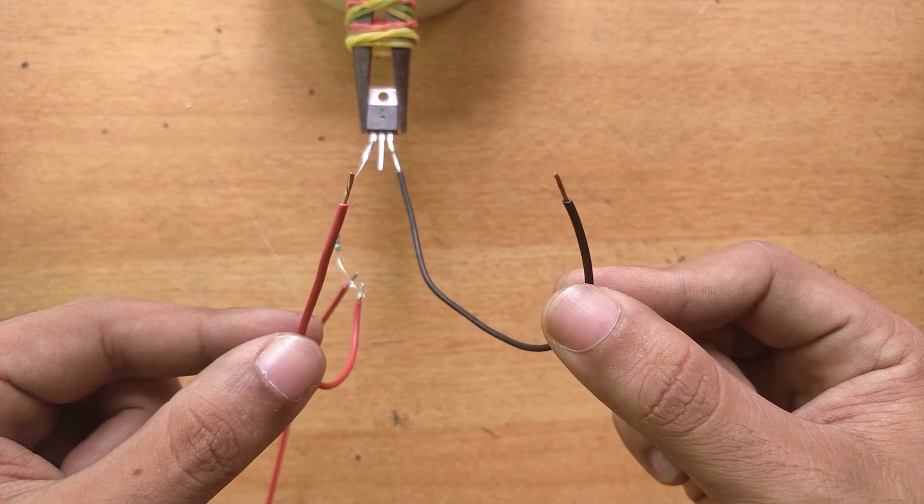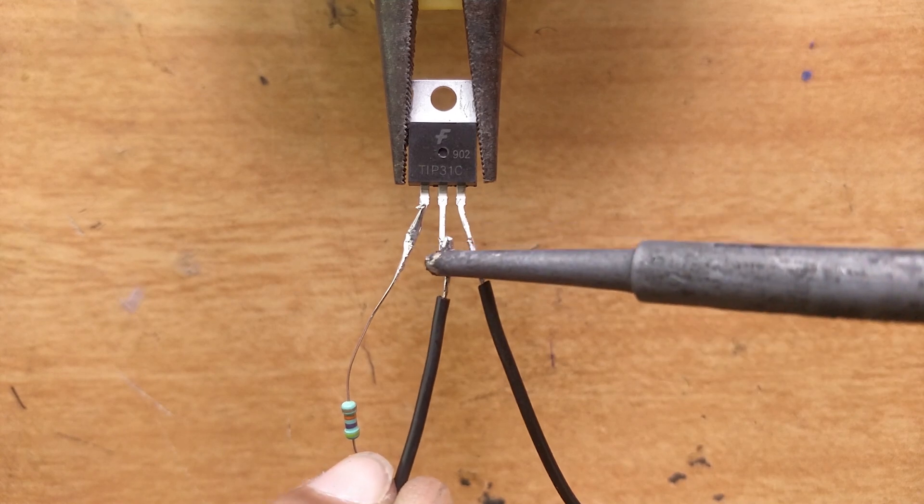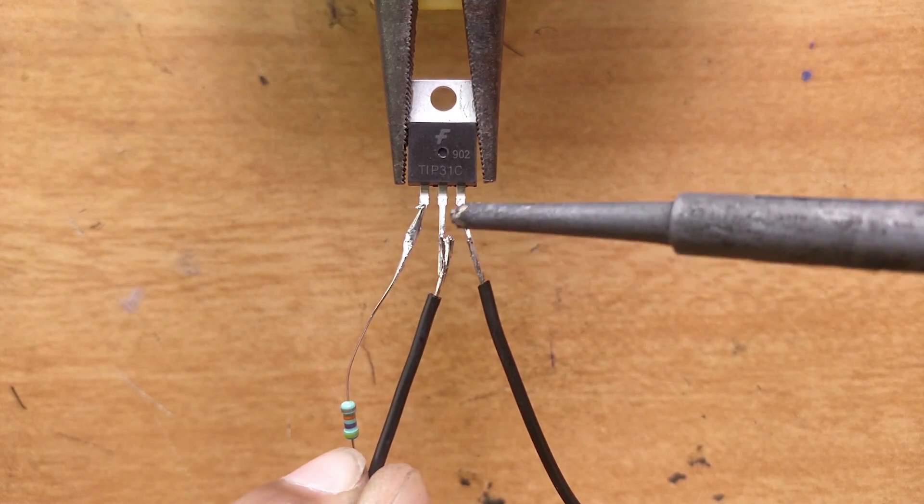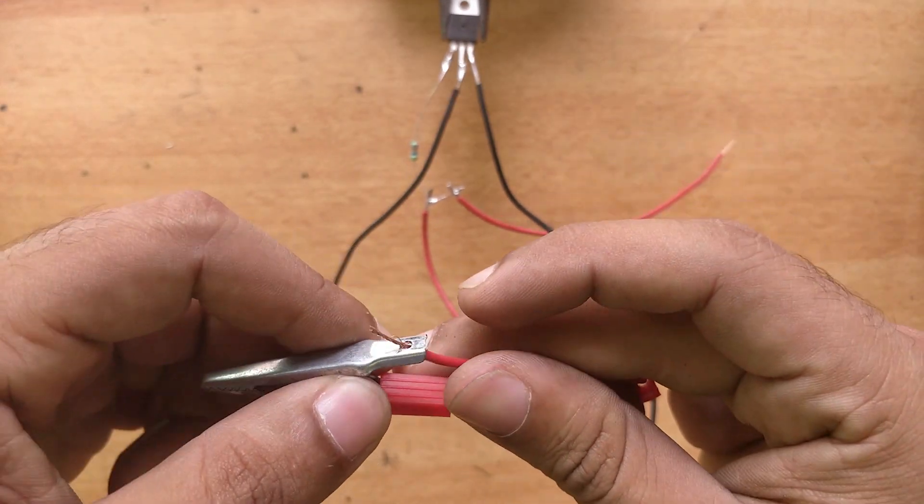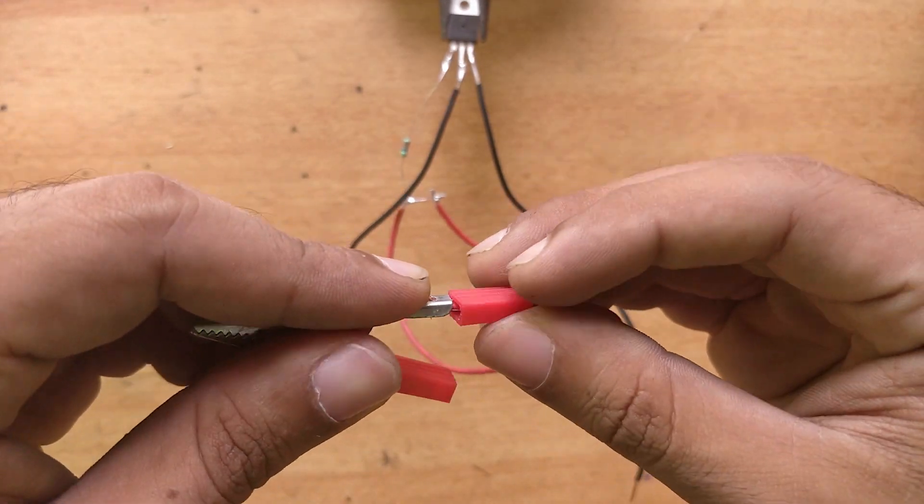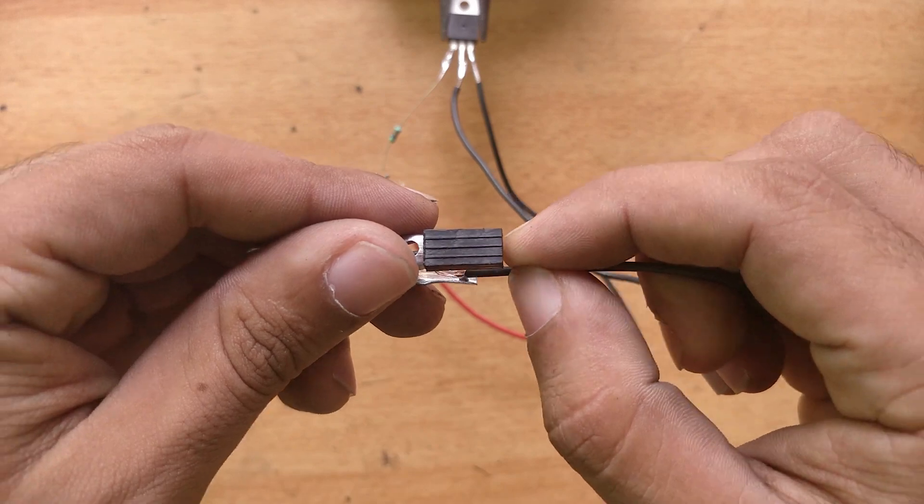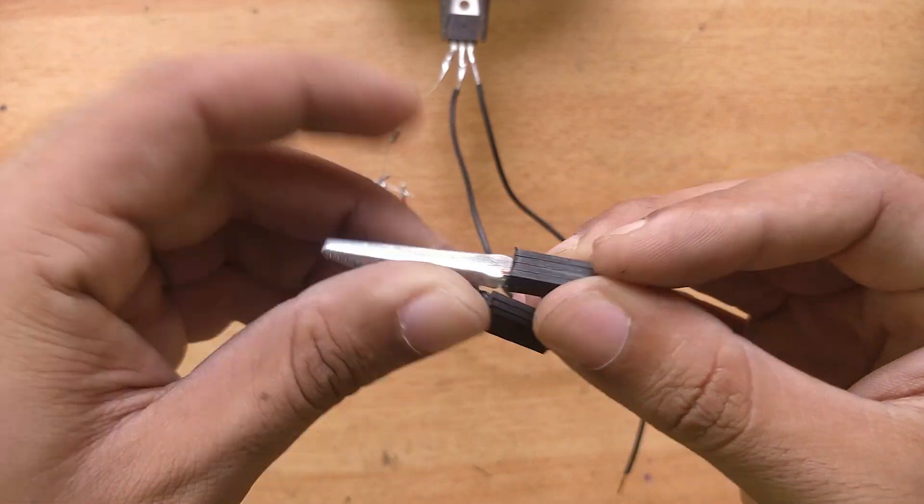And these two are the input for our circuit. Now add another wire onto the collector of the transistor. And these two will be the input for our primary coil and I am adding these crocodile clamps onto the end of these two wires so that later it will be easier for us to adjust the number of turns in the primary coil.